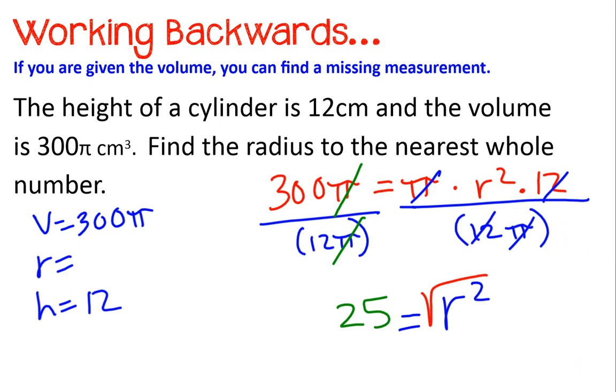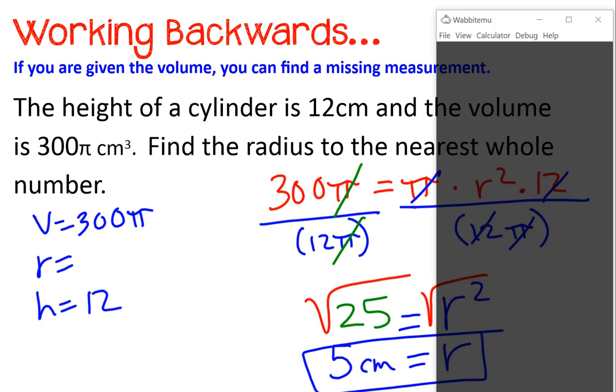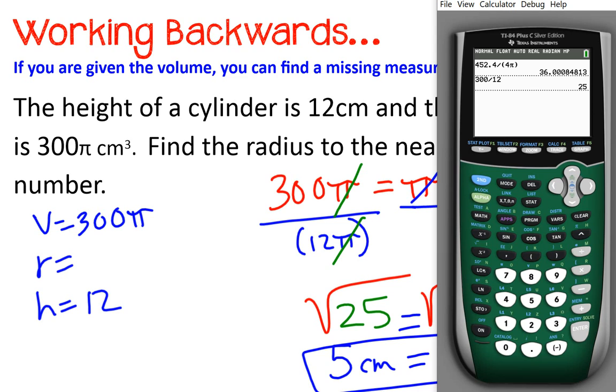Now, don't forget, that's r squared. So you take the square root of both sides. And that's how you get your actual radius. So if you don't know what the square root of 25 is, pick up your calculator. Type the square root sign, right above the x squared key.